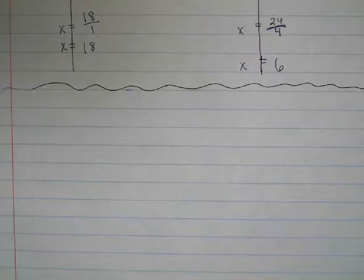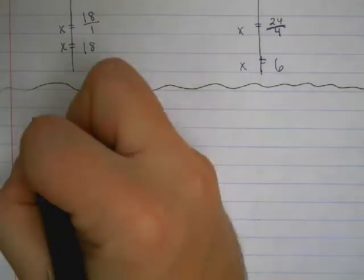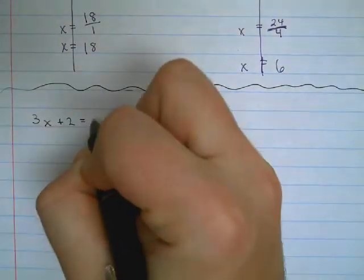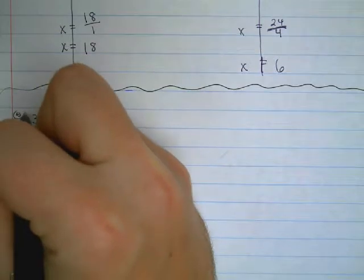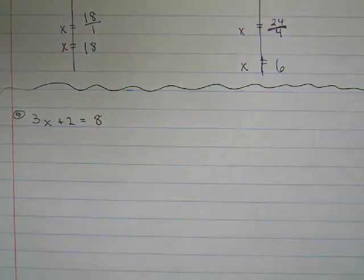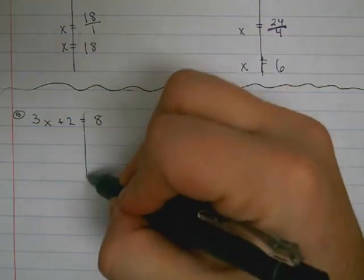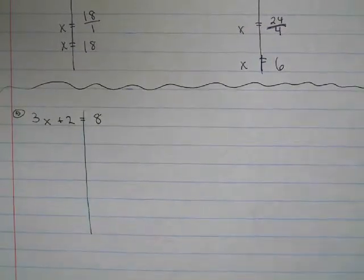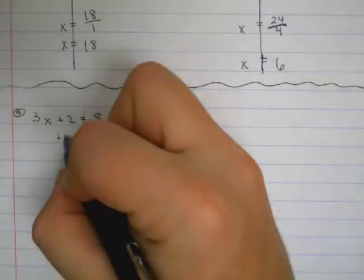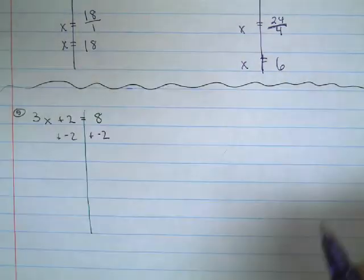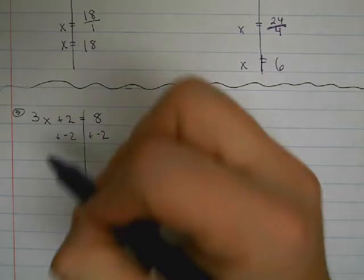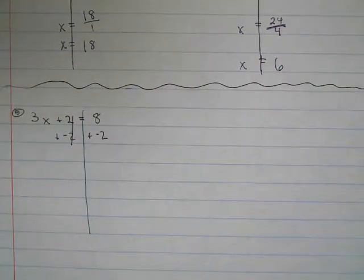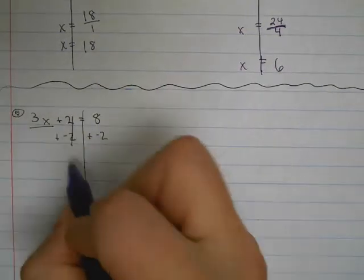Now we'll do problems that involve both. Let's see if I'm doing 3x plus 2 equals 8. We'll draw our line down the middle. We'll get rid of constants first, so we'll add the opposite, add negative 2 first. So the 2 and negative 2 will cancel.